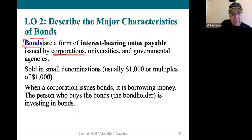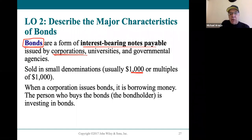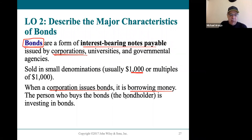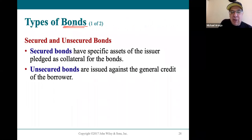One bond equals a $1,000 loan. Corporations don't just borrow $1,000 — when they go to the bond market to raise money, they're raising hundreds of millions of dollars, sometimes more. Each bond represents a $1,000 loan. When a corporation issues bonds, they're selling them to investors and borrowing that money. The investor is called a bondholder — it's an investment for them, but for the corporation it represents long-term debt.